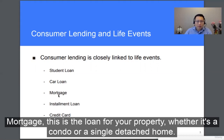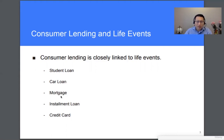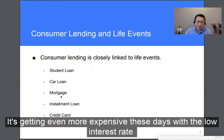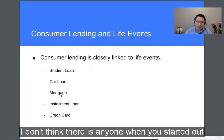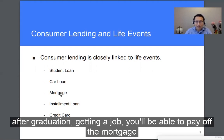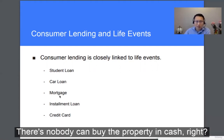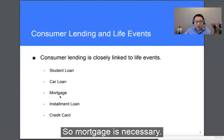Mortgage. This is the loan for your property, whether it's a condo or a single detached home. A home is expensive, and it's getting even more expensive these days. After graduation and getting a job, you'll be able to pay off the mortgage. There's nobody who can buy property in cash, so mortgage is necessary.